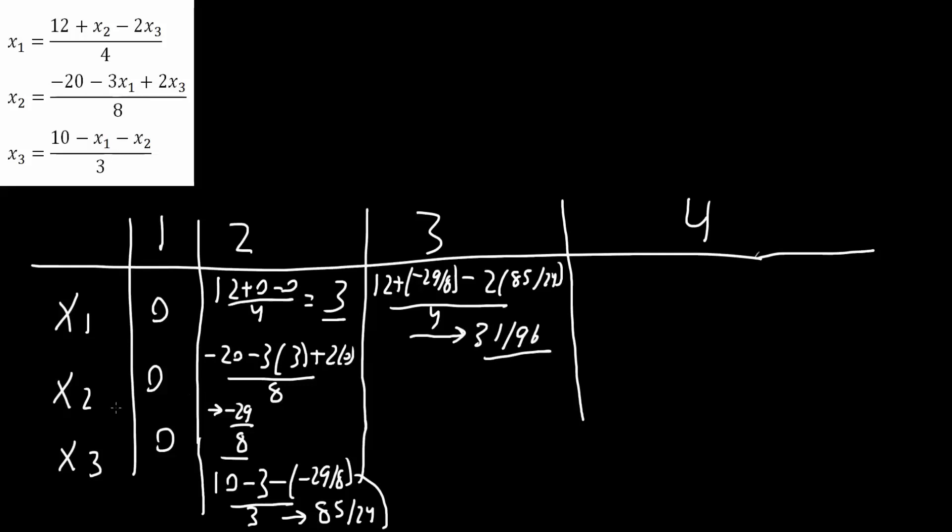And now we do the second one, and so what we do here is x1 is now 31 over 96, but x3 remains 85 over 24. So we have negative 20 minus 3 times 31 over 96 plus 2 times 85 over 24, divided by 8. So we get negative 1.736. This is x2.